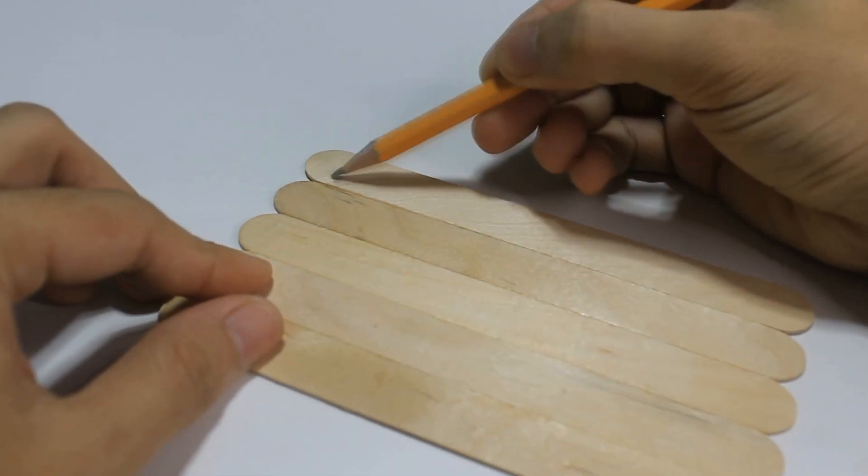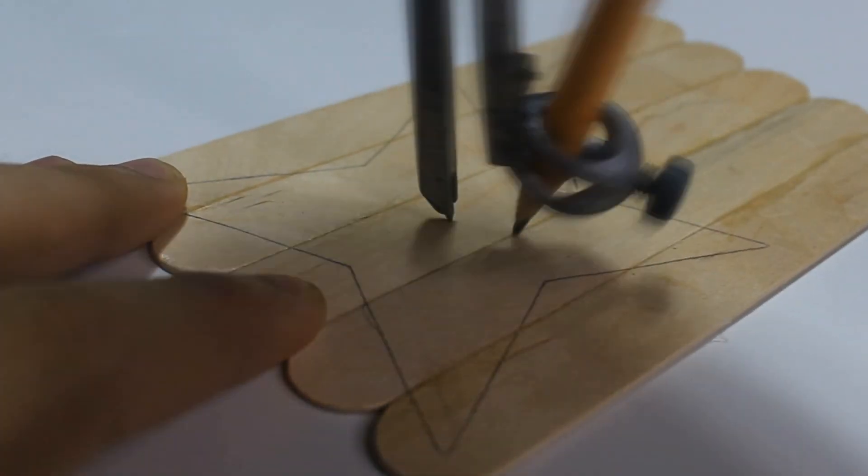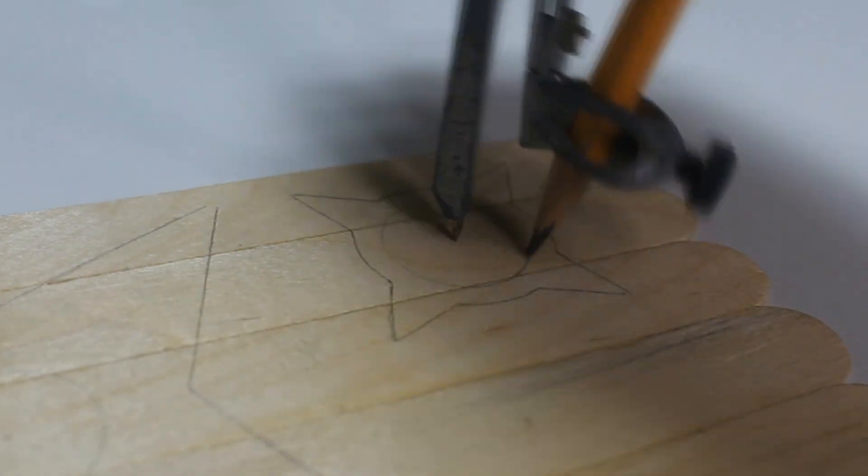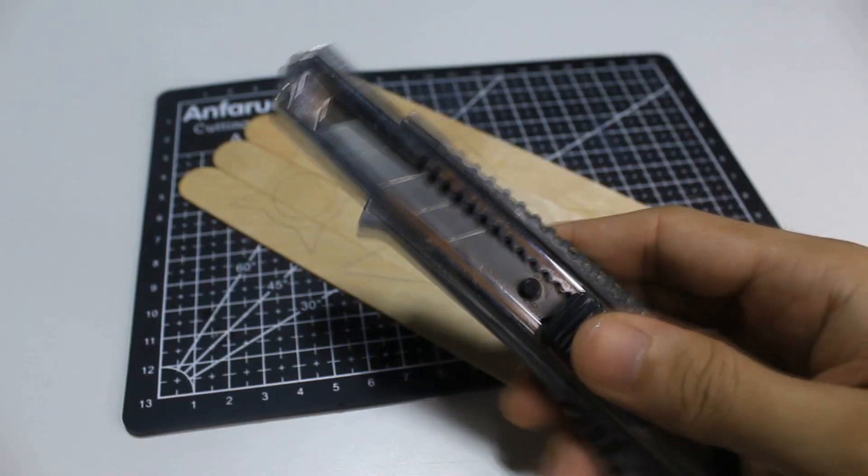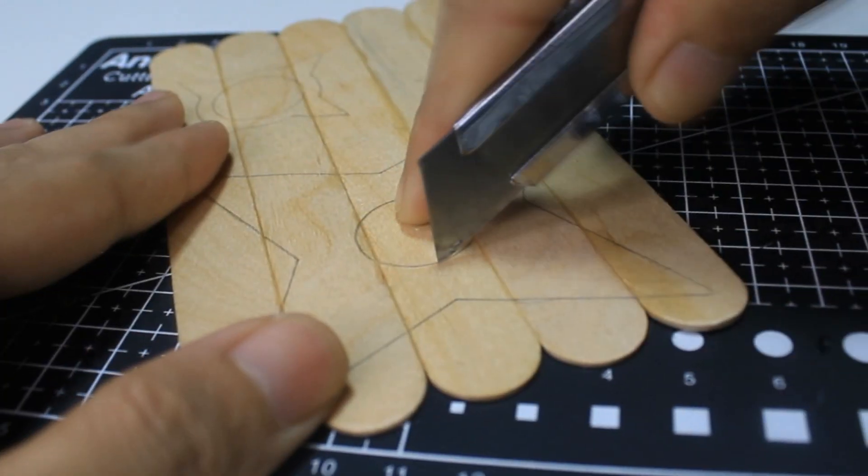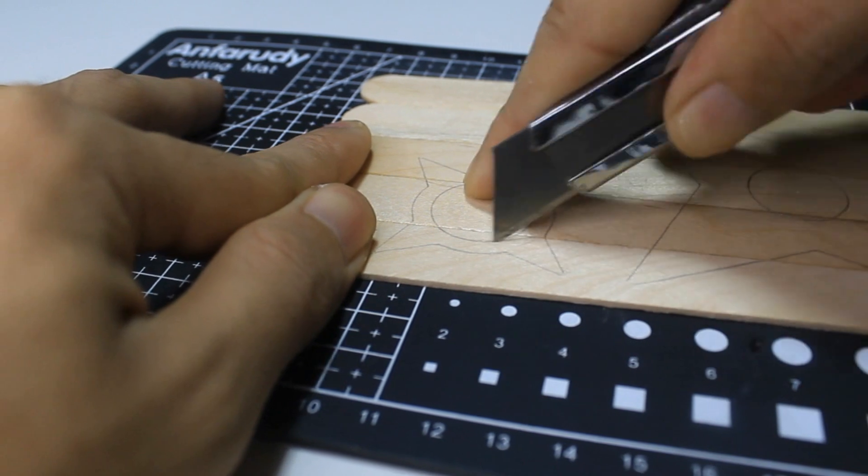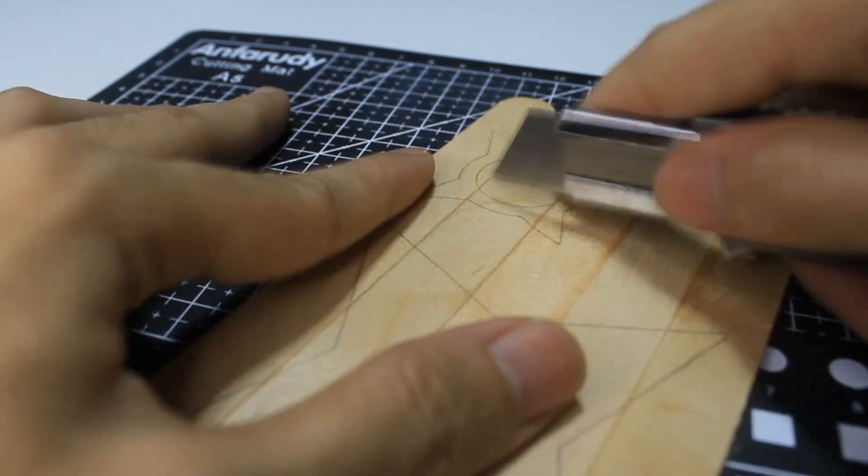We will now draw the shuriken layout. If you need a guide, just download the template that I provided in the description of the video. Now cut the layout using a retractable utility knife. Just be careful when using this.